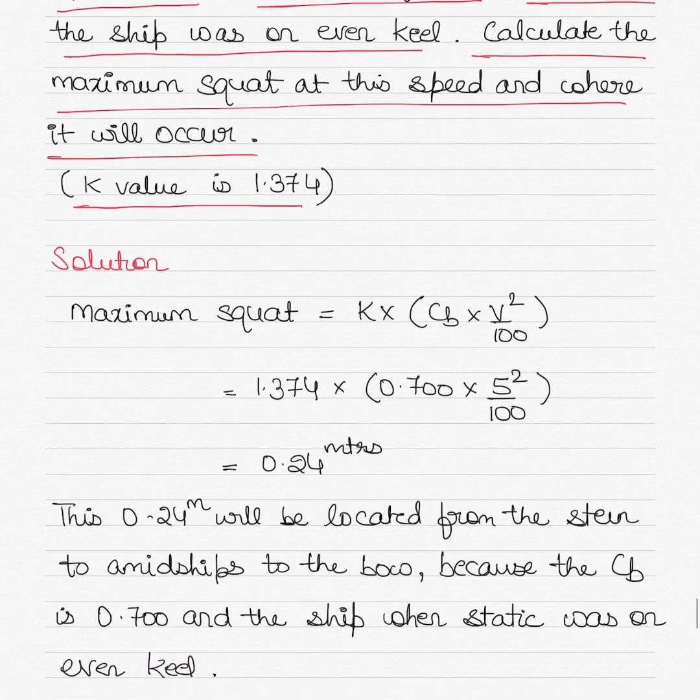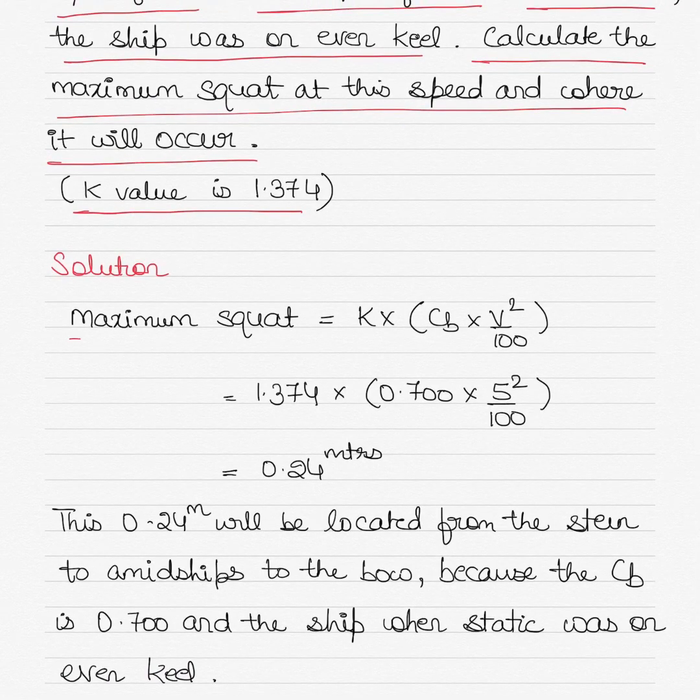So in this case again the formula is the same. Maximum squat equals constant multiplied by the block coefficient multiplied by the square of the velocity divided by 100. Simply put in the values as given to you in the question and you will get the maximum squat as 0.24 meters.